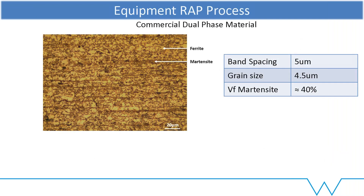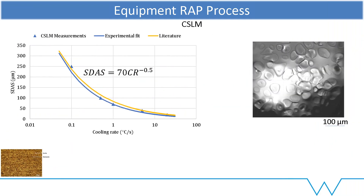Here's a quick case study — a dual phase steel. Those of you familiar with it know it's got two phases: ferrite and hard martensite. It gets a lot of its properties from its grain size, band spacing, and volume fraction. We know that band spacing inherently comes from its segregation pattern during solidification. So we put that in the confocal microscope and we get an idea about what the dendrite arm spacing is as a function of cooling rate, because that's one of the key factors. For this particular case, it agreed well with literature.